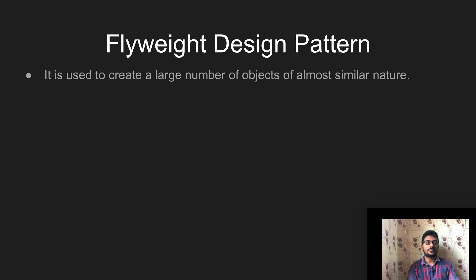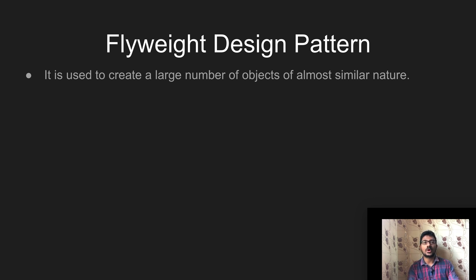For example, suppose you need a thousand copies of some data that is in our system. There are two options. The first option is to get printouts a thousand times, so we get the expected output — which means a thousand copies of the actual data.